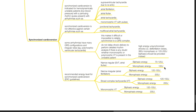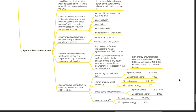Recommended energy levels for synchronized cardioversion based on ERC guidelines: for narrow regular tachycardia such as SVT or atrial flutter, biphasic energy 70 to 120 J, monophasic 100 J. For narrow irregular tachycardia such as atrial fibrillation, biphasic 120 to 150 J, monophasic 200 J. For monomorphic VT, biphasic 120 to 150 J, monophasic 200 J.